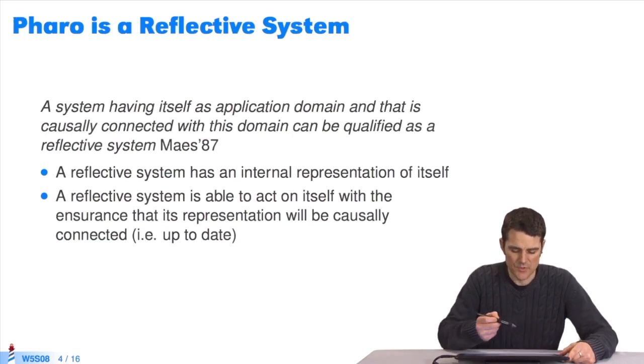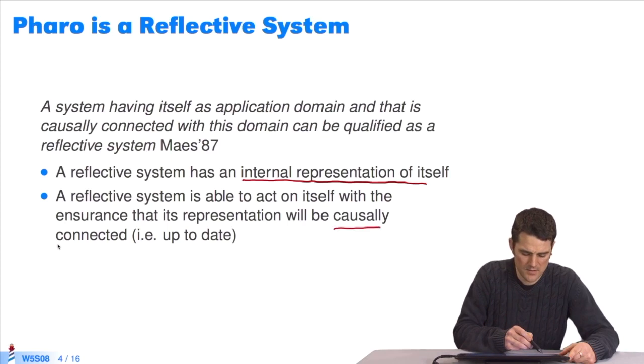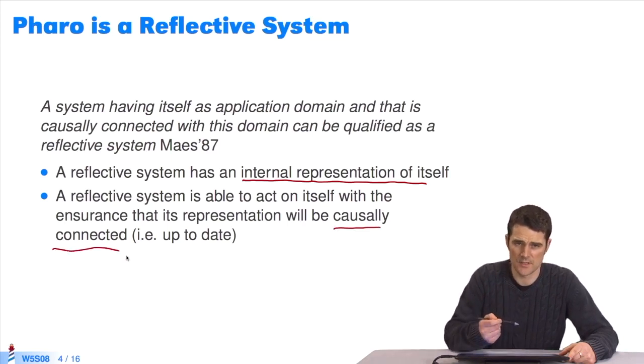A reflective system, as I said, has its own representation of itself. It's capable of representing itself, and it can act on this representation to modify itself. And when it modifies itself, it changes its state and representation. We call it a causal connection between its representation and its state. If we change the state, the system representation changes as well as the state of the system.